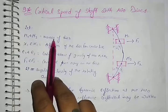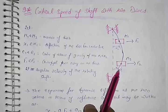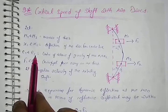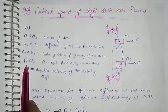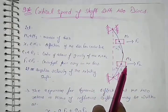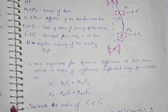Now let M1 and M2 be the masses of disc. X1 and X2 is the deflection of the disc from the centerline. E1 and E2 is center of distance of gravity of mass M1 and M2. F1 and F2 is the centrifugal force acting on the disc M1 and M2. Where omega is the angular velocity of rotating shaft. Clear?